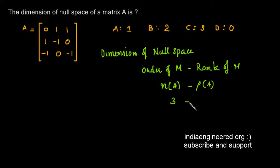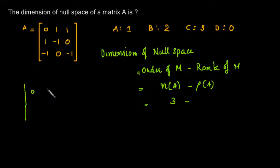So we need to find out what is the rank of A to determine the dimension of null space. Now the determinant we need to calculate is [0 1 1; 1 -1 0; -1 0 -1]. We can add...